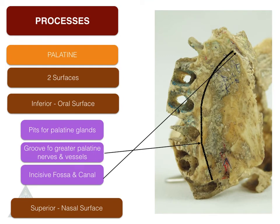Moving on to the final process, the palatine process. The palatine process is attached to the medial side below the nasal maxillary hiatus. It has got two surfaces. The inferior surface, or the oral surface, forms the roof of the oral cavity. It is rough and has got pits for the palatine glands. Along the lateral border, we have the groove for the greater palatine nerves and vessels. At the anterior end, we have the incisive fossa and canals, which transmit the greater palatine vessels and the nasopalatine nerve.